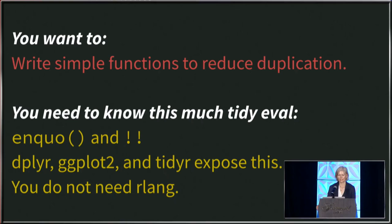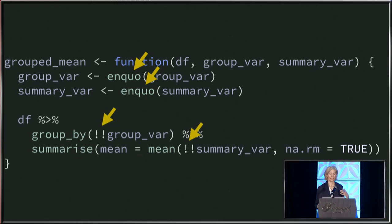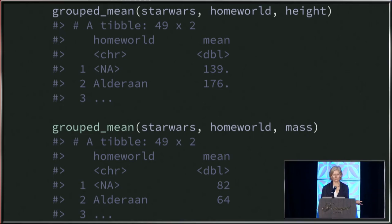Still in the world of writing simple functions to reduce duplication — sometimes your life is not simple enough for pass-the-dots to get the job done. In that case, the paradigm you'll need is using a function called enquo to capture that unquoted thing and quote it, then at the place you need to mention it, unquote it with bang-bang — hence the really bad dad joke at the beginning. dplyr, ggplot2, and tidyr all expose this syntax. That's why you don't need rlang — it's anticipated that people might need these. Here's an example where I need to capture both a grouping variable and a summary variable with the enquo/bang-bang pattern, and the number of arrows on the page tips you off to why the dot-dot-dot trick wouldn't have worked. The code works — you can change the variable being summarized over.